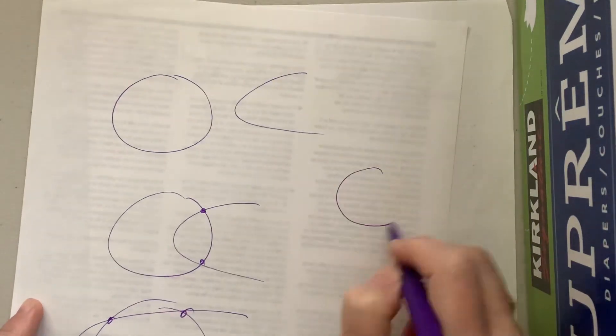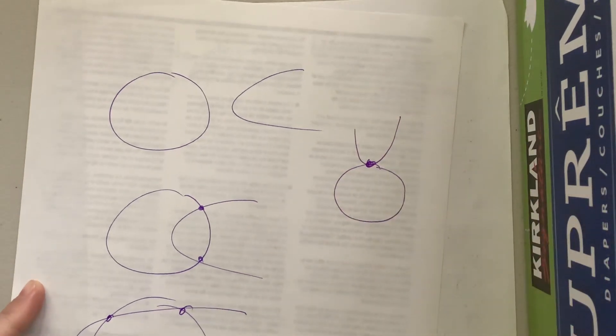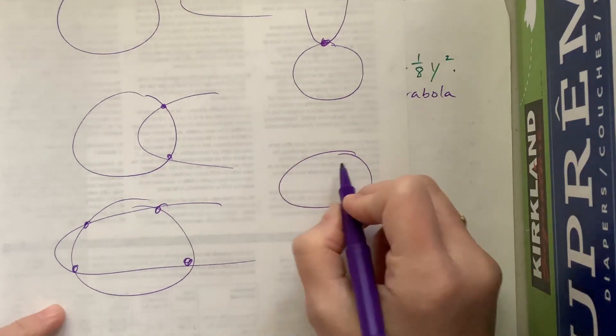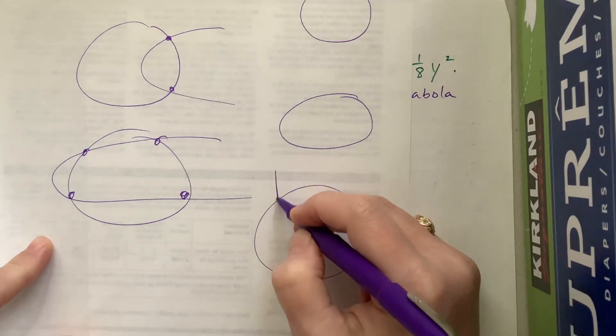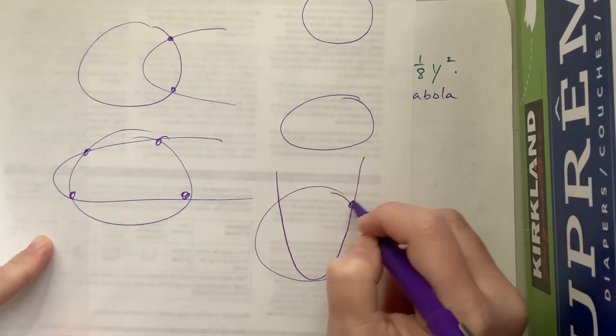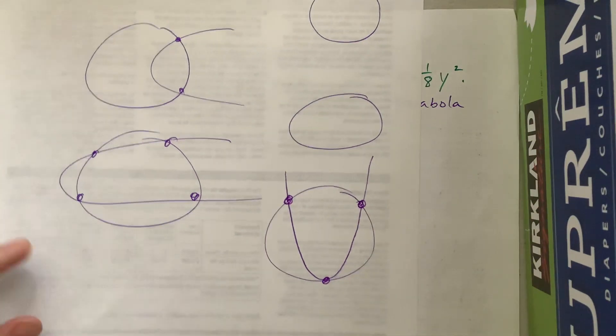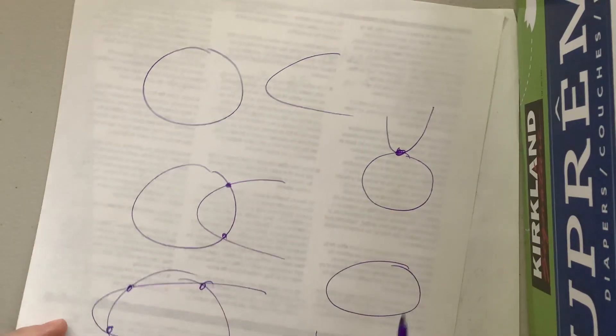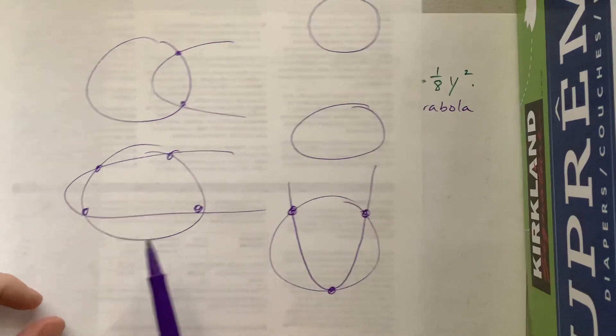You could have a circle with the parabola opening on top of it and they just intersect at one spot. You could have a circle and then the parabola kind of does this sort of thing where it's hitting in three different places. So you could have no solution, you could have one solution, you could have two solutions, you could have three solutions, you could have four solutions.